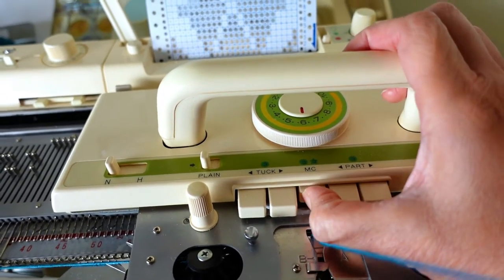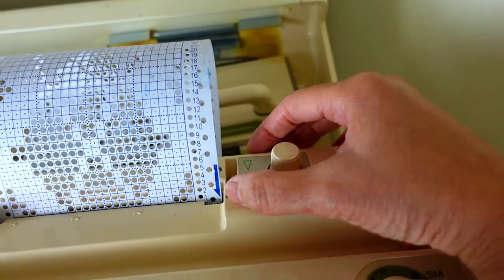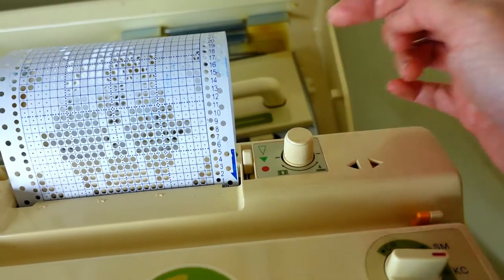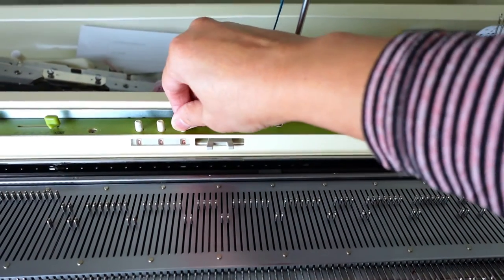Now we can press the MC button for multi-color knitting. Set the punch card to the green triangle for normal advance of the punch card.